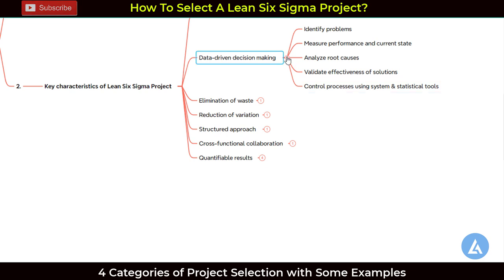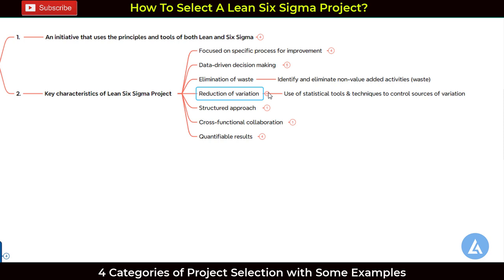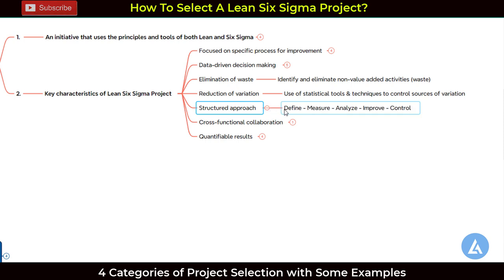The third important characteristic is focus on elimination of waste — identifying and eliminating non-value-added activities, also called waste, from our business processes. The fourth characteristic is reduction of variation, using statistical tools and techniques to control sources of variation. The fifth characteristic is a structured approach — we use the DMAIC or DMADV approach to solve problems or improve business processes.